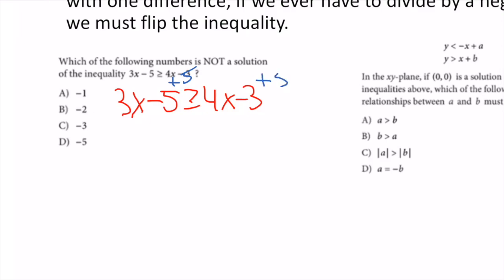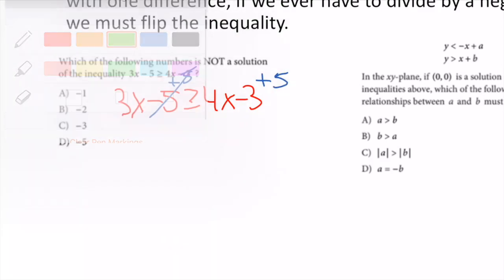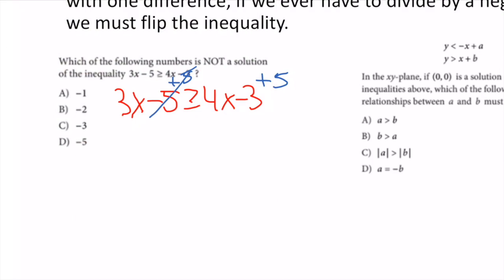I treat this exactly the same way — x's on one side, numbers on the other. I add 5 to get rid of the -5, and subtract 4x to move it over. On the left side: 3x - 4x = -x. On the right: -3 + 5 = 2.